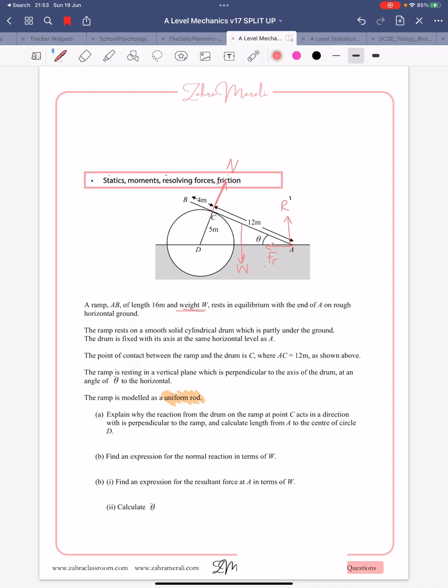Now remember, with moments, we're going to have up equals down, left equals right, and we take moments at A. But in this case, it's a little bit different, because it's given us a question first. It says, explain why the reaction from the drum at the point C acts in a direction which is perpendicular to the ramp, and calculate the length from A.